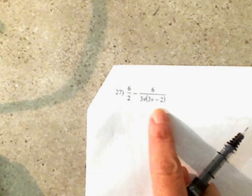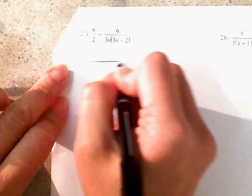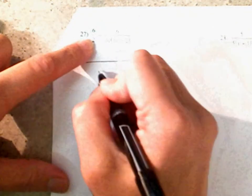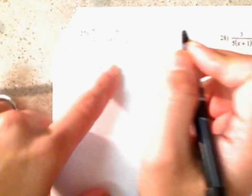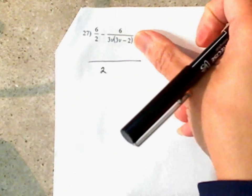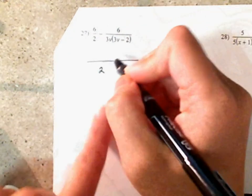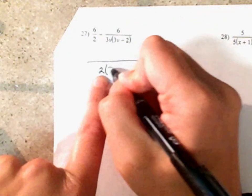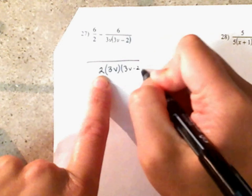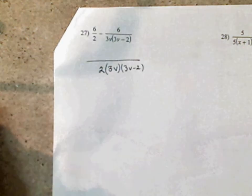Take a look — you can't do anything there. So draw your line. You see how there's a 2? I'm going to bring that 2 down. We get your second one. You see how it's 3V times 3V minus 2? You see how that's not written? So I'm going to bring down my 3V times 3V minus 2. This means you're multiplying it all together.